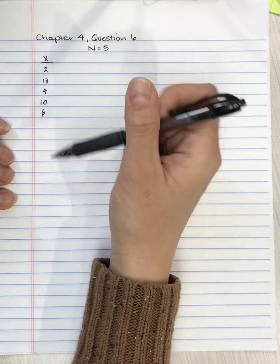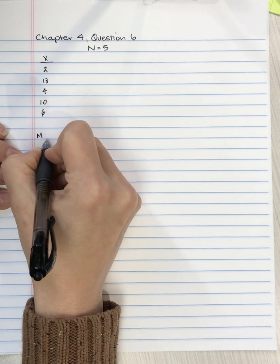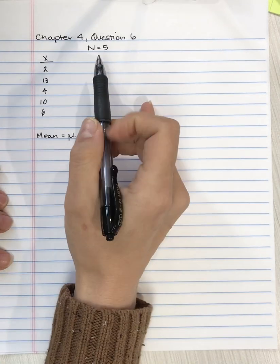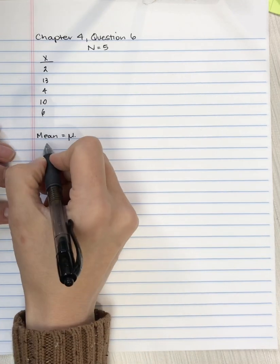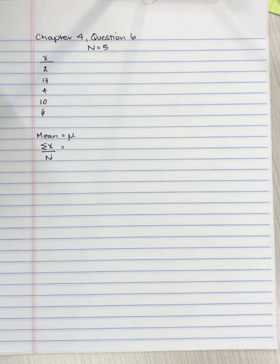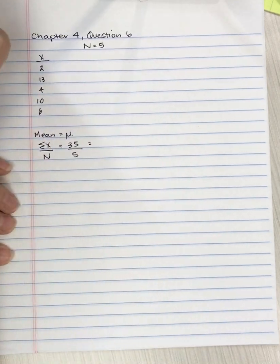So I've got the scores here. For the definitional formula, the first thing I need to do is calculate the mean. Now, it's mu, not capital M, because we're dealing with a population. We know we're dealing with a population because the question says a population of scores, and also because there's a big N. So we're going to take the sum of x and divide by the number of scores. So 2 plus 13 plus 4 plus 10 plus 6 is 35, and we divide that by the 5 scores, and we get 7.